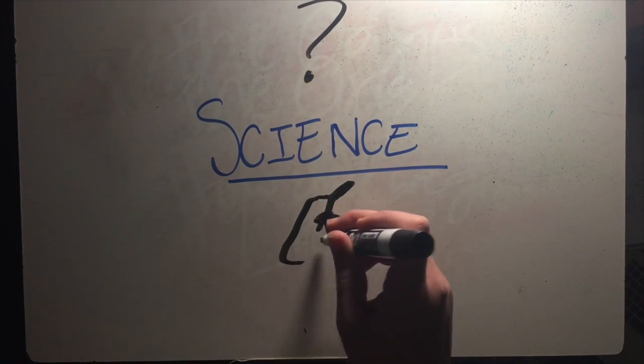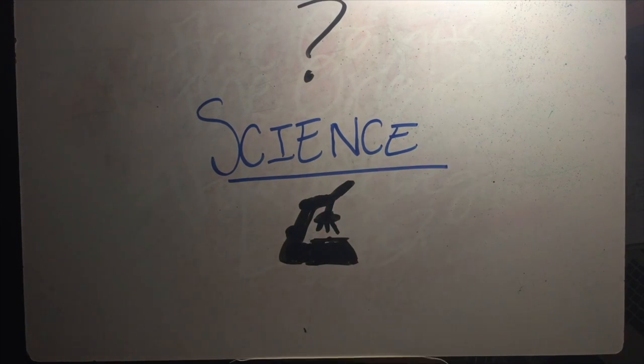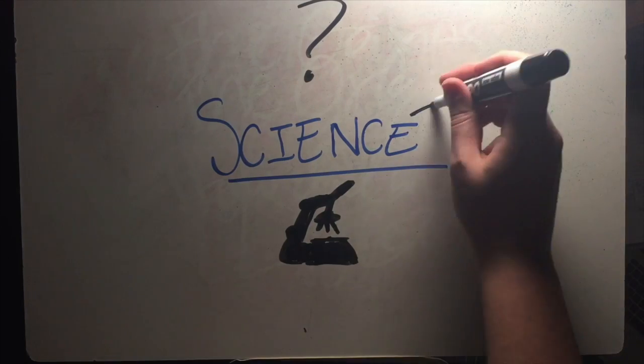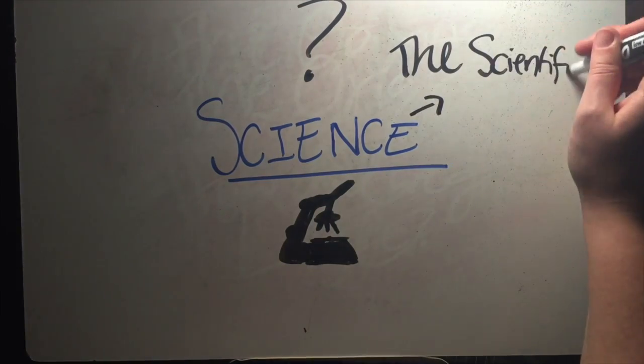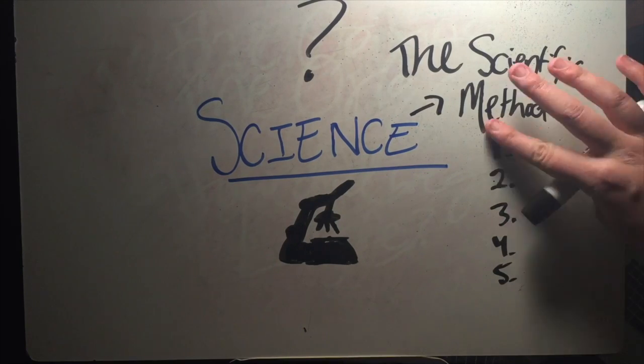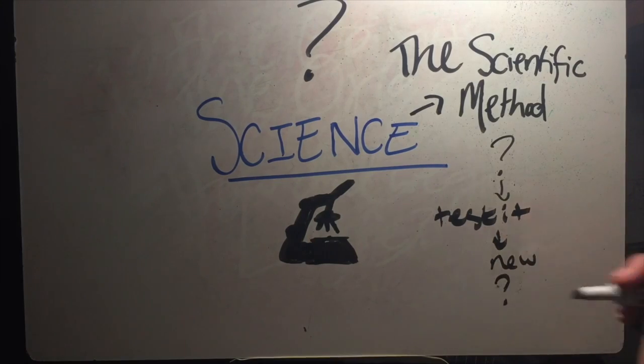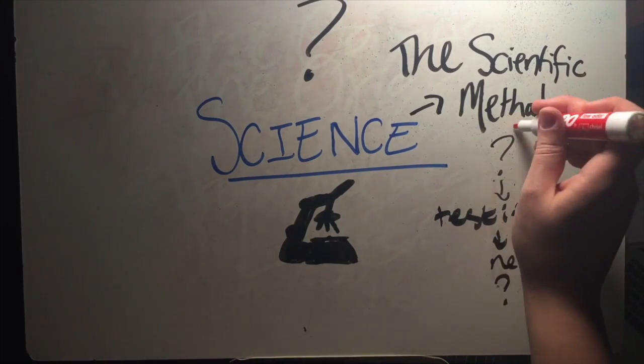Science seeks to learn about the natural world through observation and experimentation. Science doesn't address anything supernatural or that can't be proven. We use science to answer questions through the scientific method. The scientific method is a series of specific steps, but it boils down to asking a question, forming a hypothesis and testing it, and determining if your results support your hypothesis.